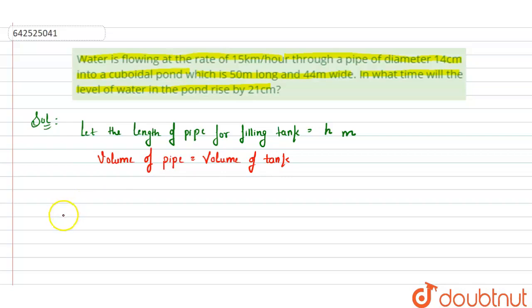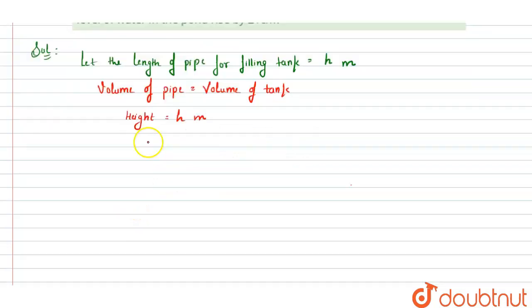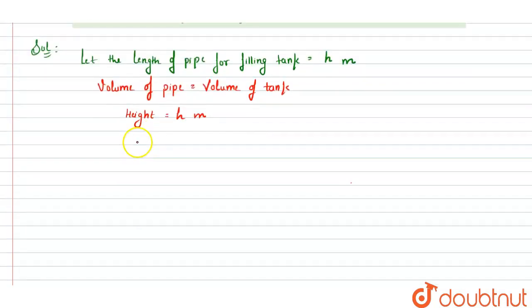Now pipe is in the form of cylinder and the height of cylinder is given to us. Height equals H meter that we already assumed.